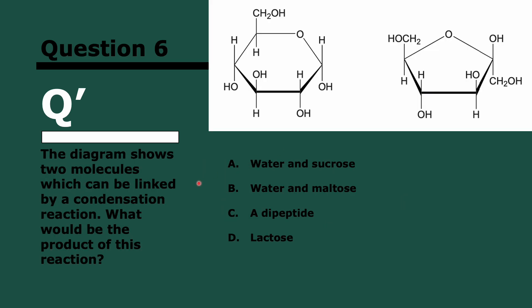Question six. The diagram shows two molecules which can be linked by a condensation reaction. What would be the product of this reaction? Three, two, and one. Water and sucrose. In any condensation reaction, water is released. This is glucose over here and this is fructose. When glucose and fructose get together, that forms sucrose. Maltose is formed by glucose and glucose, dipeptide these are not amino acids, and with lactose, this is fructose and glucose, so that will not form lactose.